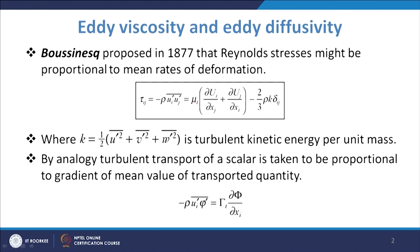The Kronecker delta δ_ij equals 1 when i = j and 0 when i ≠ j. In matrix form, it has 1s along the diagonal and 0s elsewhere. This gives the correct result for normal Reynolds stresses where i equals j.